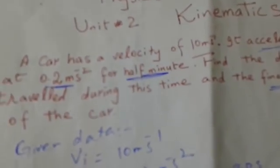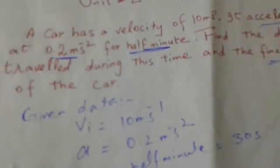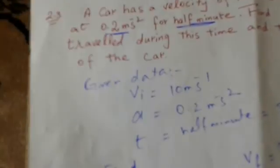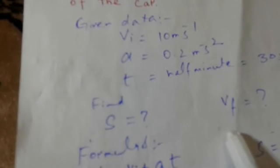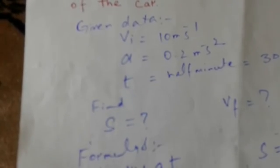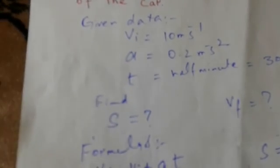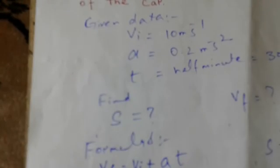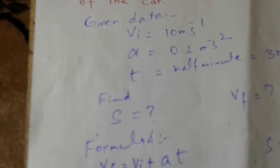So we have the distance as 390 meters. We have solved our numerical in which we had to find the distance and the final velocity. Our numerical is solved. If you like my videos then please subscribe to my channel. Thank you very much.